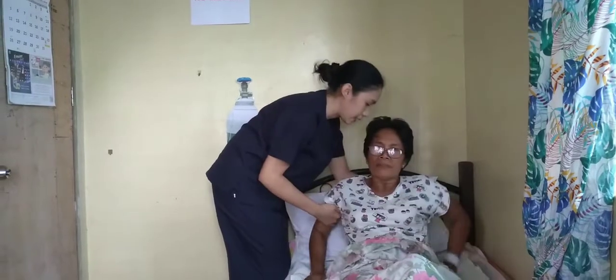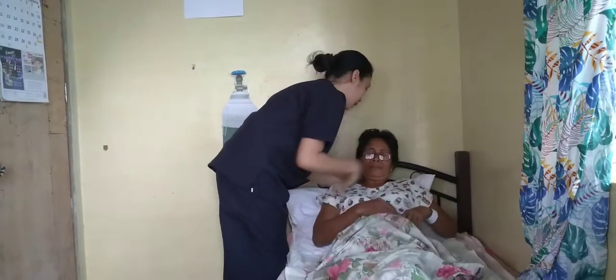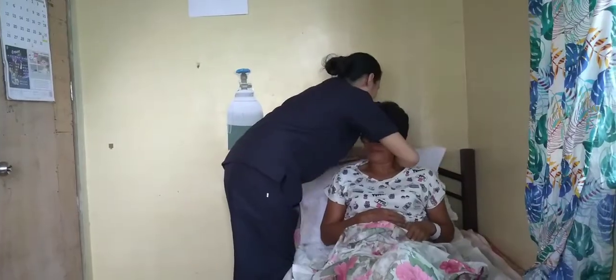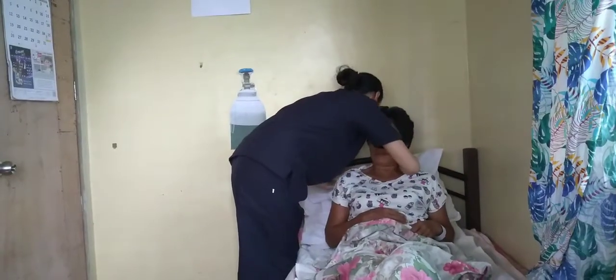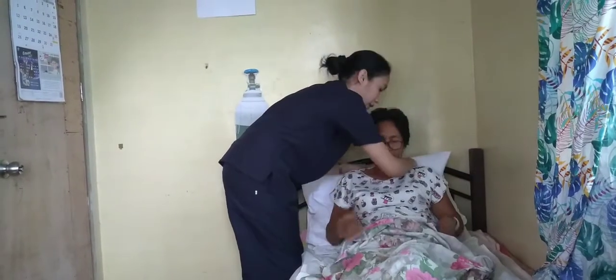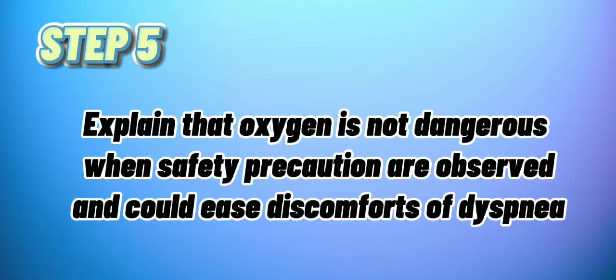Step number four: assist the client in a semi-Fowler's position if possible. The semi-Fowler's position permits easier chest expansion and hence easier breathing. Step number five: explain that oxygen is not dangerous when safety precautions are observed and can ease the discomforts of dyspnea.